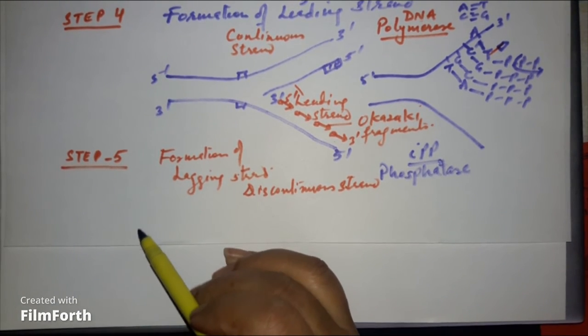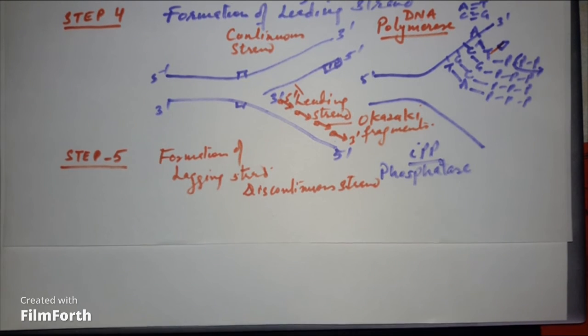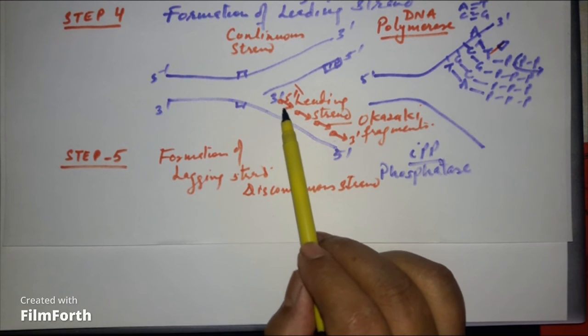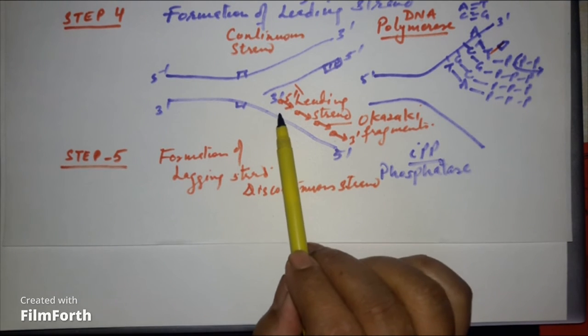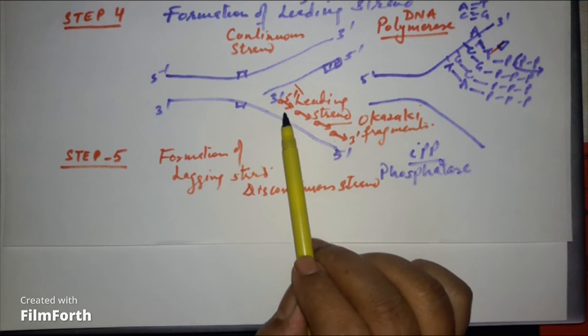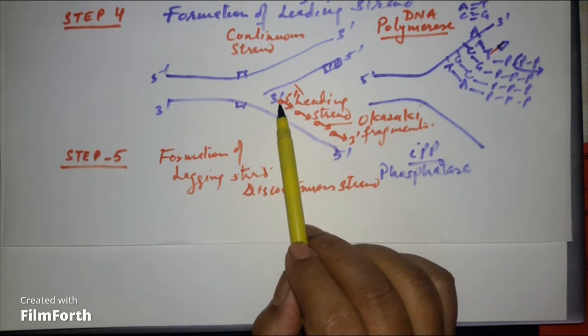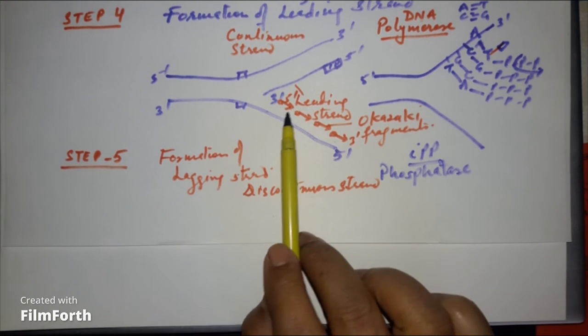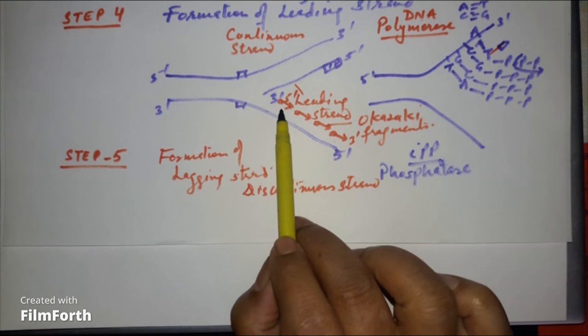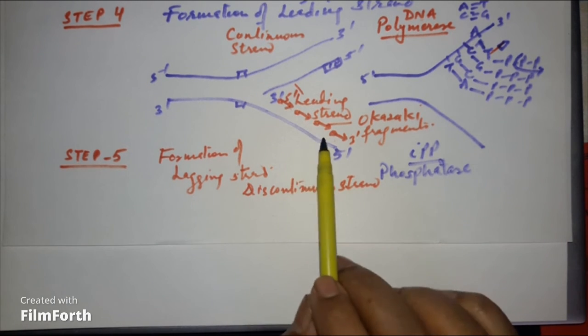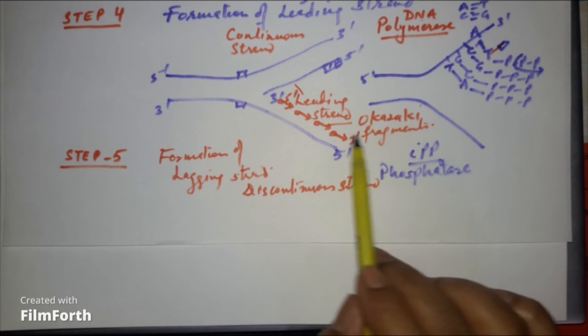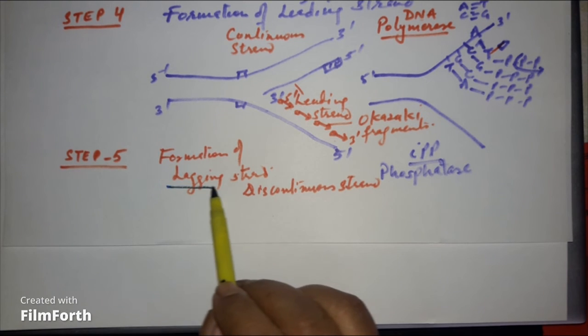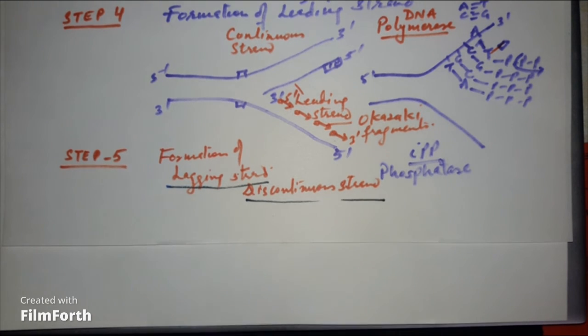Step 5, formation of lagging strand or discontinuous strand. It will be formed in the 5 prime to 3 prime direction only, but it is formed in small fragments because every time there is requirement of RNA primer and this is occurring in the reverse direction, inside out. So it is formed in small fragments which are called Okazaki fragments. This is called lagging strand or the discontinuous strand.